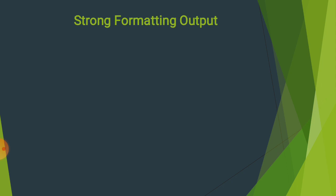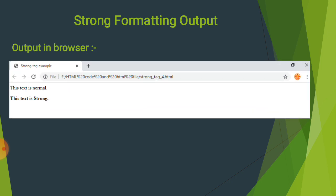Strong formatting output — output in browser: browser पे किस प्रकार से show होगा देखते हैं। 'Strong tag example' title show हुआ और 'This text is strong' browser पे bold जैसा show हो रहा है।